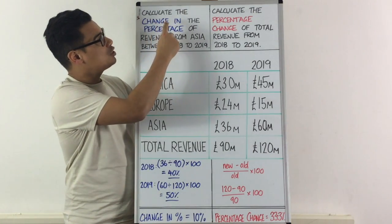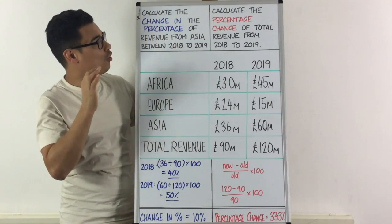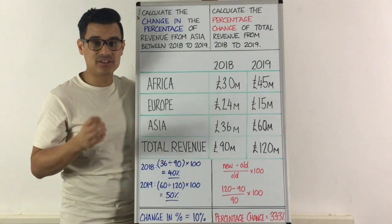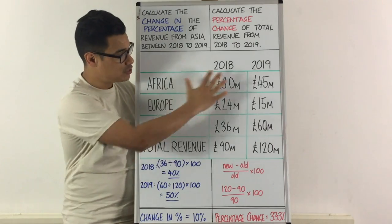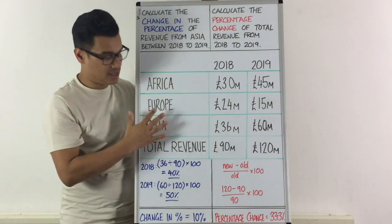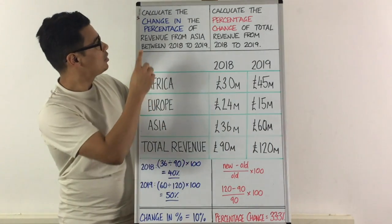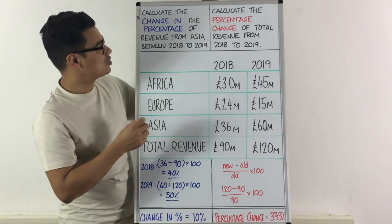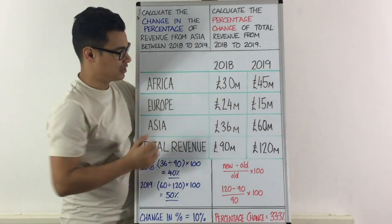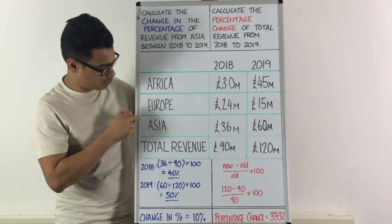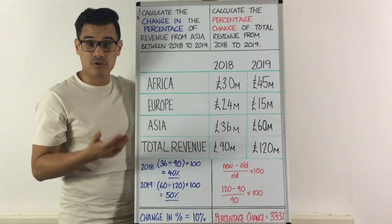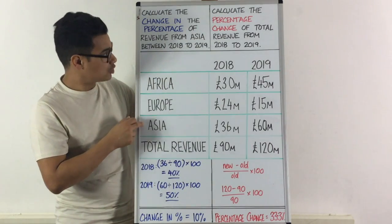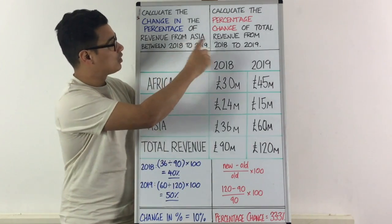So calculate the change in the percentage of revenue from Asia between 2018 and 2019, and we're going to use this data here. There are three different regions that this company makes its revenue in: Africa, Europe, and Asia. And clearly you're looking for Asia.